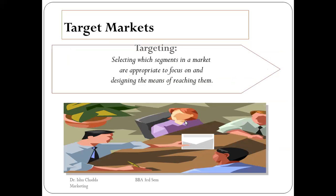A target market is when you select your segments — that is the next step after segmentation. You determine which segments in the market are appropriate to focus on and design the means of reaching them. For example, if you segment your market into A, B, C, D, you choose which market is more appropriate and more preferably suited to your company, such as markets B and D where there are more customers and more potential for profit.